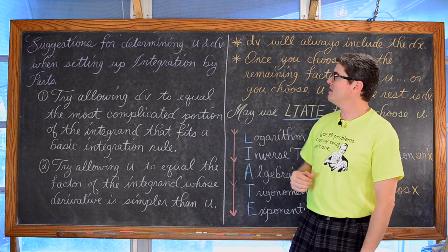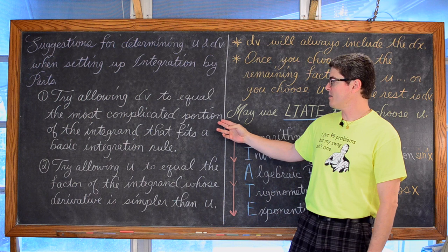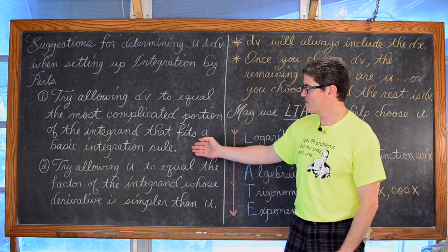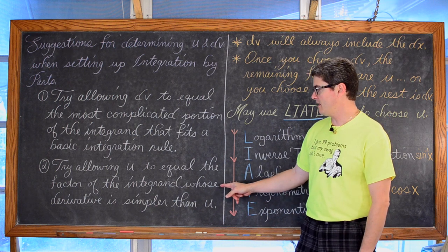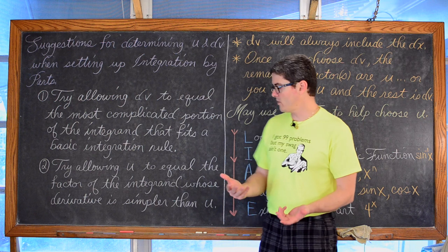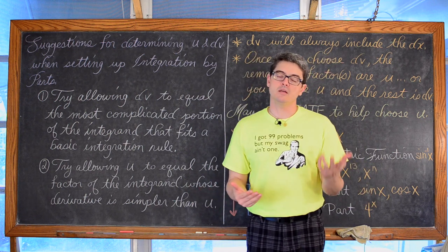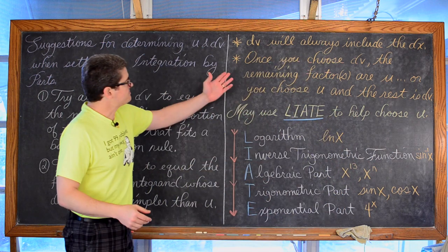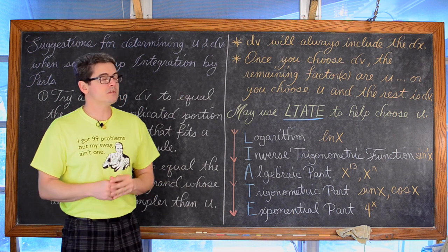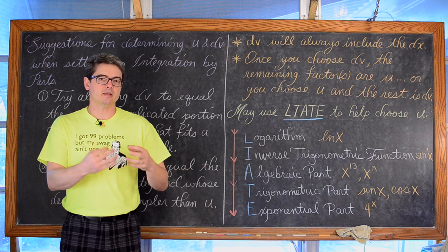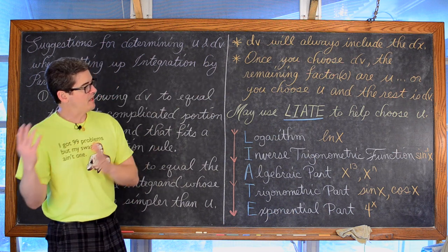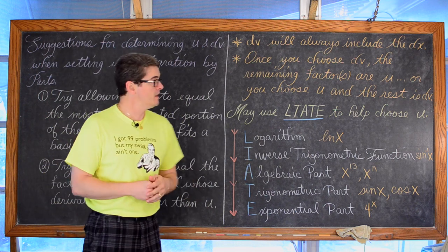Suggestions for determining u and dv when setting up integration by parts: try allowing dv to equal the most complicated portion of your integrand that fits a basic integration rule. Or try allowing u to equal the factor of the integrand whose derivative is simpler than u. For example, you wouldn't want to let e^(2x) be u because its derivative 2e^(2x) is not simpler. Also, dv will always include the dx, because you are going to have to integrate that equation to find v. Once you choose dv, the remaining factor or factors are going to be u, or vice versa.